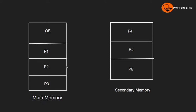Here we have two types: swap in and swap out. Swap out means transferring a process from main memory to secondary memory.